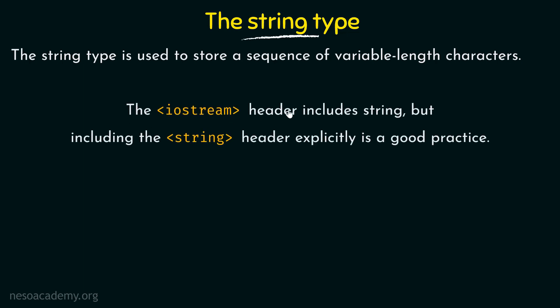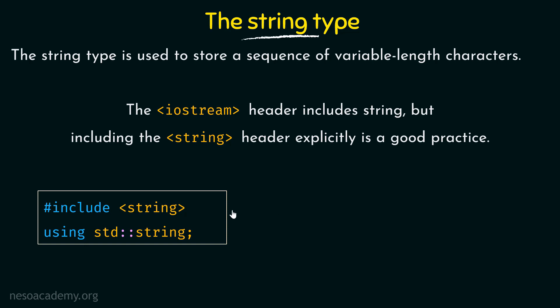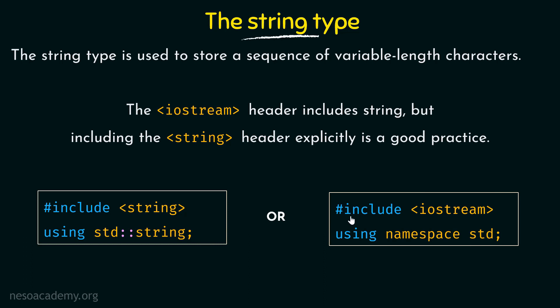When we use the String type, the iostream header includes String, but including the String header explicitly is a good practice. The String type is present under the String header and also inside the iostream header which we include in all our programs. So it is okay if you just include iostream, but it is also good practice to explicitly include the String header. You can say include string header and also use std::string, because String is present under the standard namespace. Either way it is going to work, but you have to include one of them in order to use the String type.